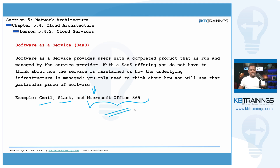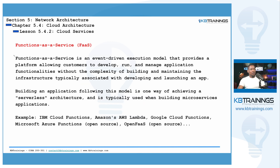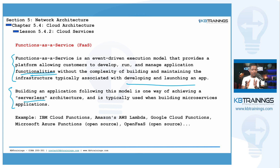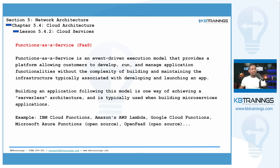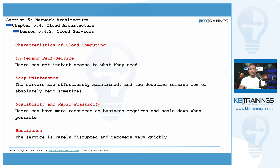Some SaaS applications are free, some are paid. Then we have Functions as a Service, where the cloud service provider gives you functionalities needed for your application development, triggered by events in your app. This is what we call a serverless environment — you don't look at the server or care about what's going on behind the scene. Examples include IBM Cloud Functions, Microsoft Azure Functions, and AWS Lambda. Now I'll finish by talking about some characteristics of cloud computing. First is on-demand self-service — it's usually automatic.